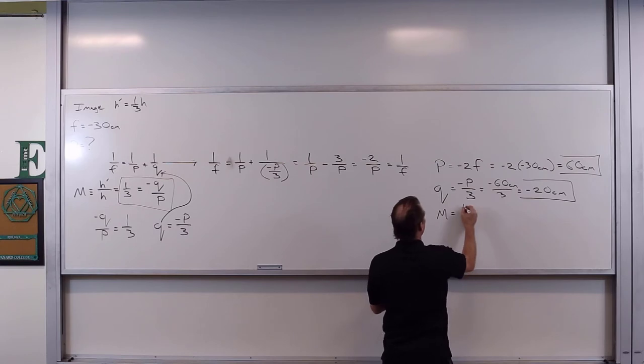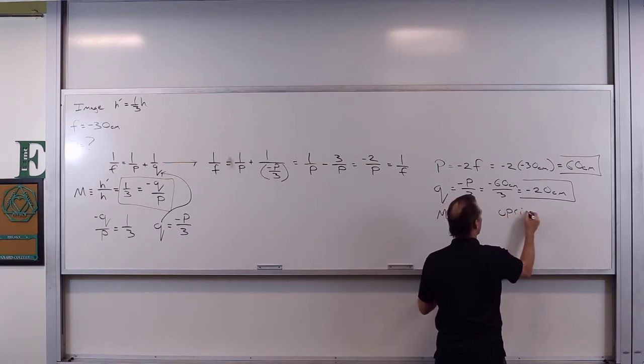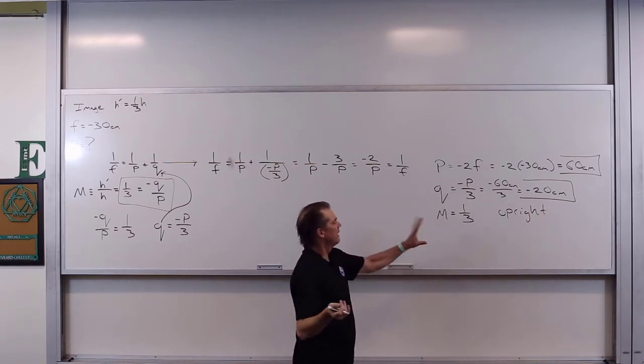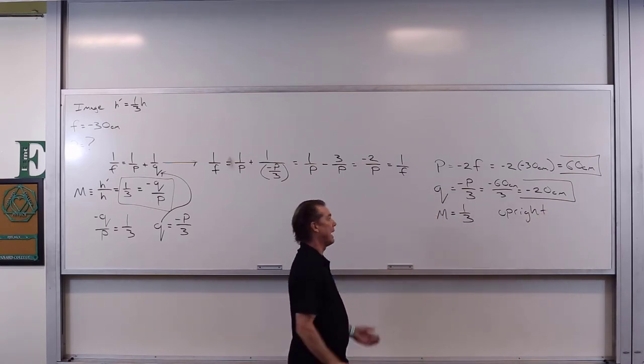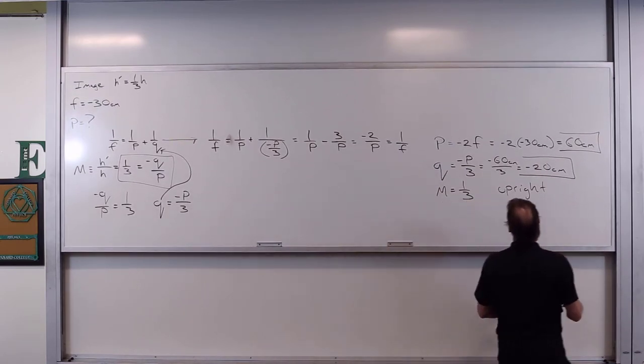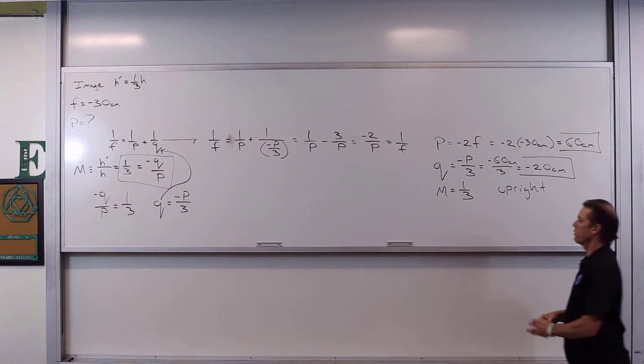Magnification is equal to one-third, and we get that this is upright. Magnification is positive. It's diminished in size. It's one-third the size, one-third the height of the object. And is it real or virtual? Well, we've got that the image is on the front side of the mirror. Negative image distance, that says virtual.